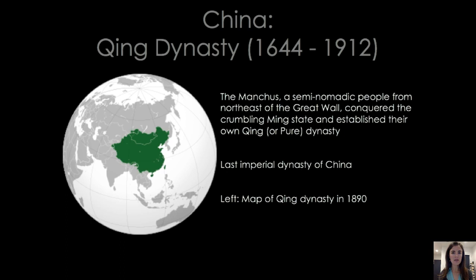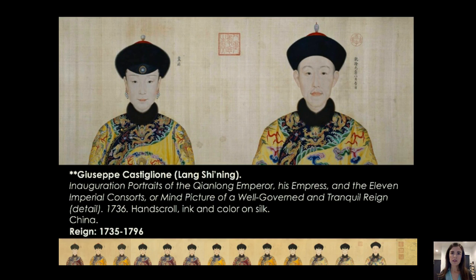The Qing is the last imperial dynasty in China. In 1912, the last Emperor Pu Yi would abdicate, and China would move into becoming a republic, and then finally the People's Republic. The map on the left shows the Qing Dynasty in 1890, roughly similar to China today. An example of this East-West exchange is a favorite artist among the Qing emperors: Giuseppe Castiglione.